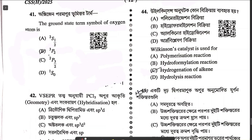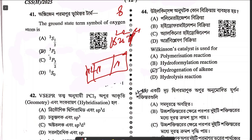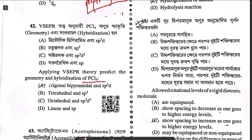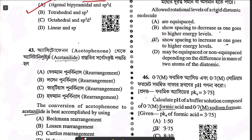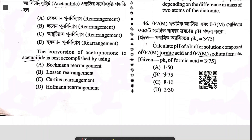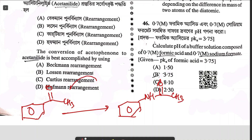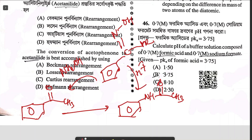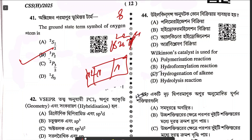Question forty-one: ground state term symbol of the oxygen atom — oxygen is 1s², 2s², 2p⁴, with electrons at positions 1, 2, 3, 4. Answer: option from 41. Question forty-two: geometry and hybridization of PCl5 — option A. Question forty-three: conversion of acetophenone to acetanilide. First add hydroxylamine (NH2OH) to form an oxime, then treat with acid — a Beckmann rearrangement occurs — answer A. Question forty-four: Wilkinson's catalyst RhCl(PPh3)3 is used for homogeneous hydrogenation — option C.